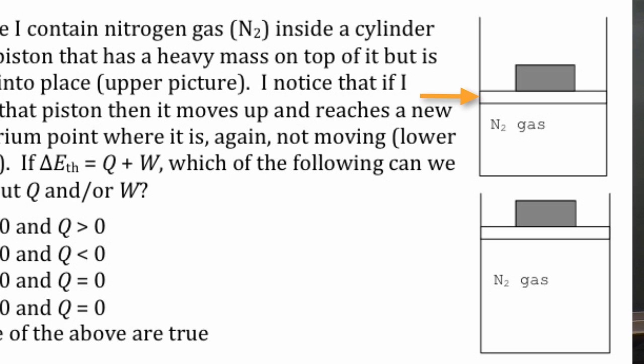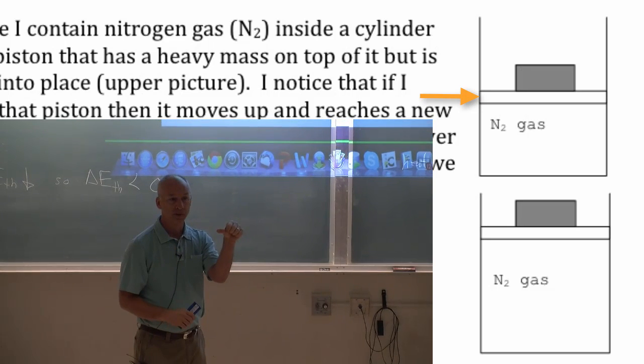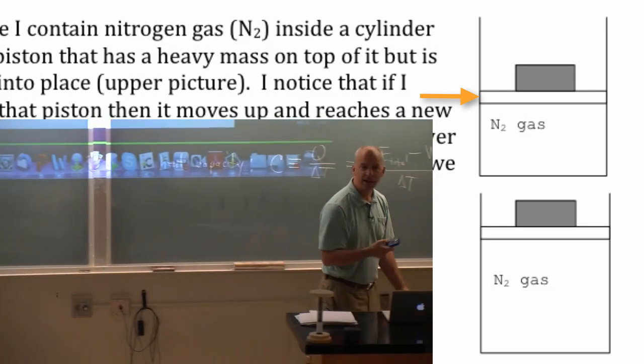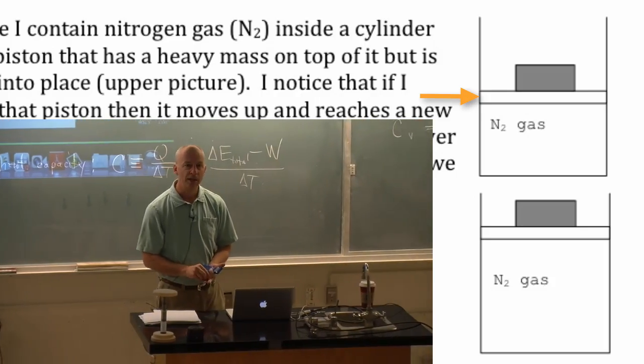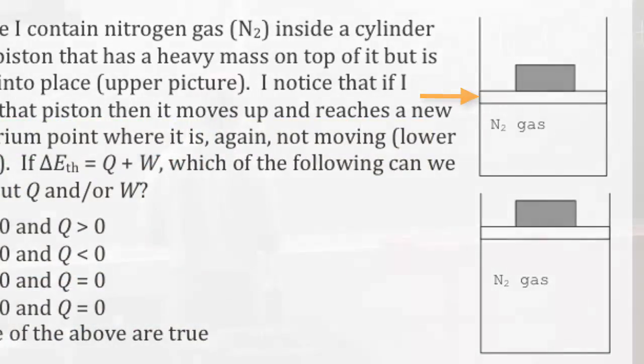That would be adding heat at constant volume. The gas's volume wouldn't change. If I took the top one, the piston is locked in place, I put a flame underneath it, and I heat up the gas. I would add heat at constant volume, and its temperature would go up. Thermal energy would go up if I did that.